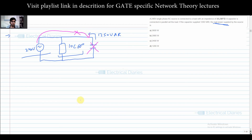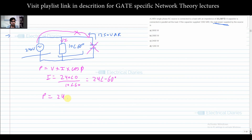Since the load and capacitor are in parallel, I can find the current through the load: I = V/ZL = 240∠0° / 10∠60° = 24∠-60°. The real power is P = V × I × cos φ = 240 × 24 × cos 60° = 240 × 24 × 0.5 = 2880 watts.